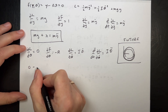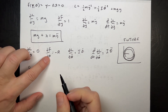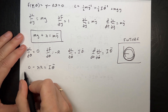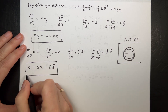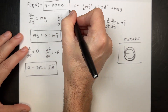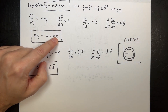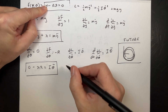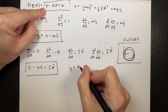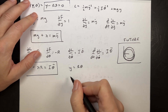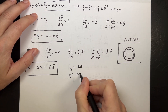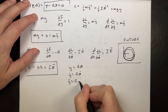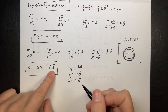Putting that together: zero minus lambda·R equals I·theta-double-dot. So I now have two equations and the constraint. Using Y = R·theta, differentiating gives Y-dot = R·theta-dot, and differentiating again gives Y-double-dot = R·theta-double-dot, so I can eliminate theta-double-dot.